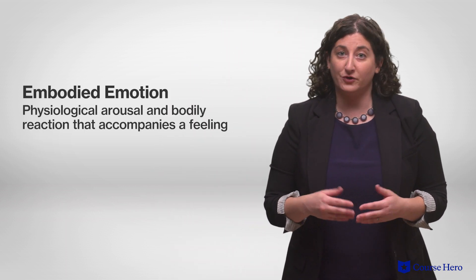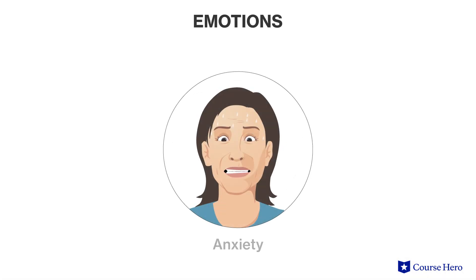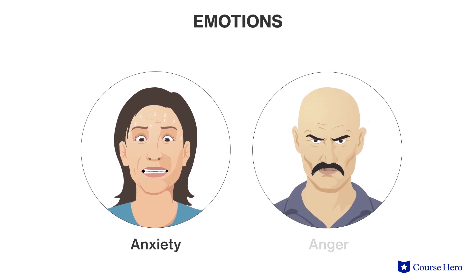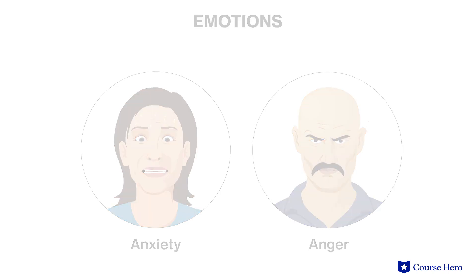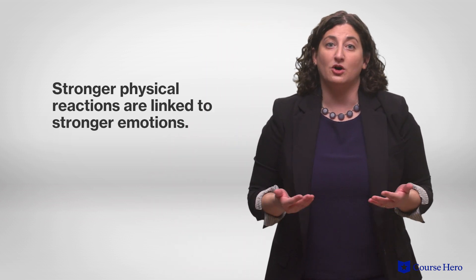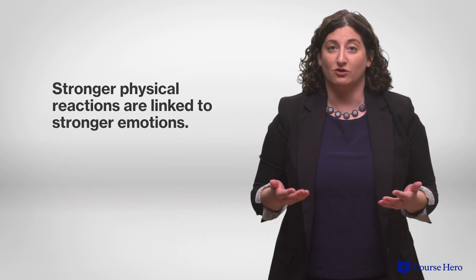No matter how they interact, it is clear that our feelings are linked to physiological experiences, what researchers refer to as embodied emotion. For example, anxiety may involve sweating, feeling cold, and having butterflies in the stomach, while anger could involve a clenched jaw, a pounding heart, and feeling hot. The physiological arousal and bodily reactions linked to feelings help determine the intensity of emotions, since stronger physical reactions are linked to stronger emotions.